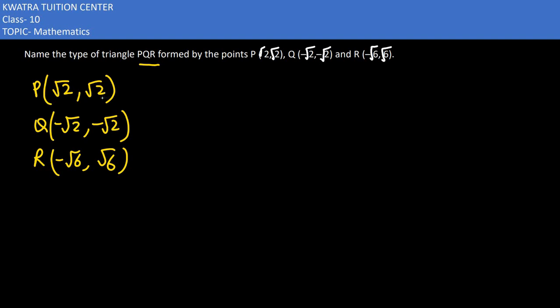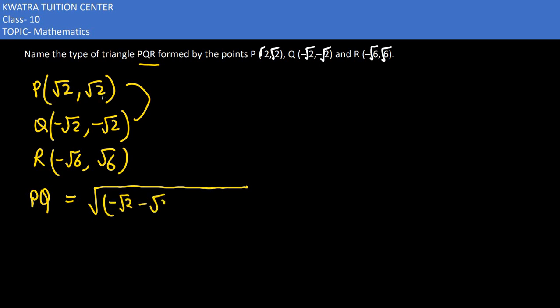We have to find the distance between P and Q. To find the distance PQ, we take these two coordinates and substitute (x2 - x1). So we have (-√2 - √2) squared, plus (-√2 - √2) whole square.